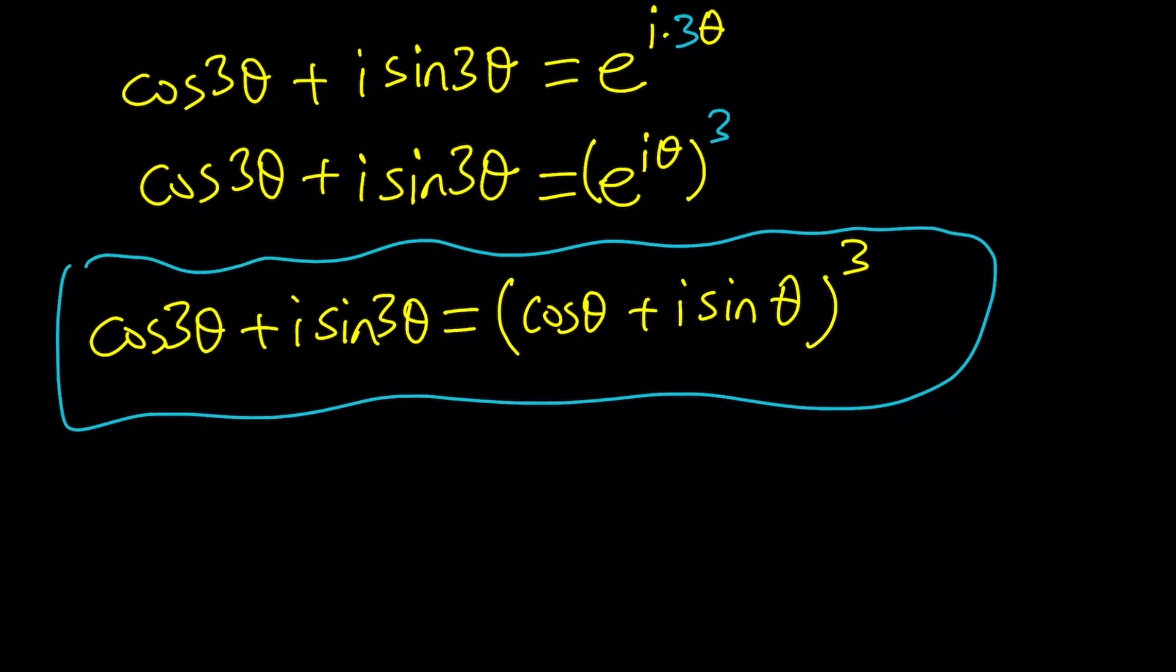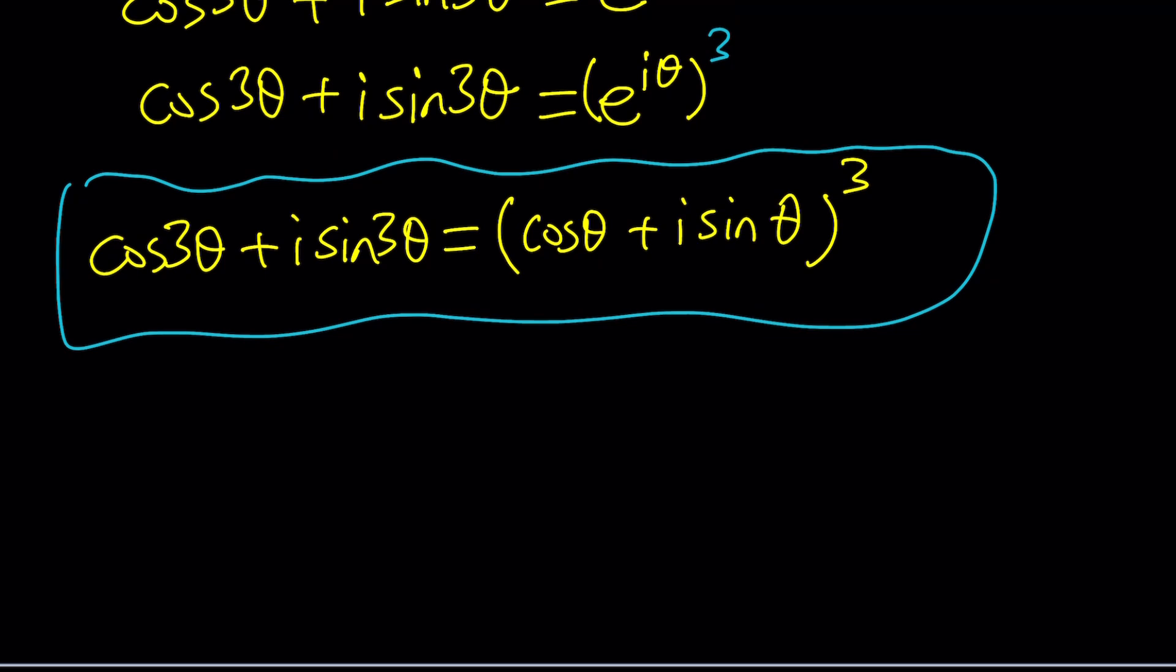So since our goal is to find cosine 3 theta and sine 3 theta we're going to keep that on the left but first let's focus on what's on the right. So I'm going to take that and simplify it as much as possible.